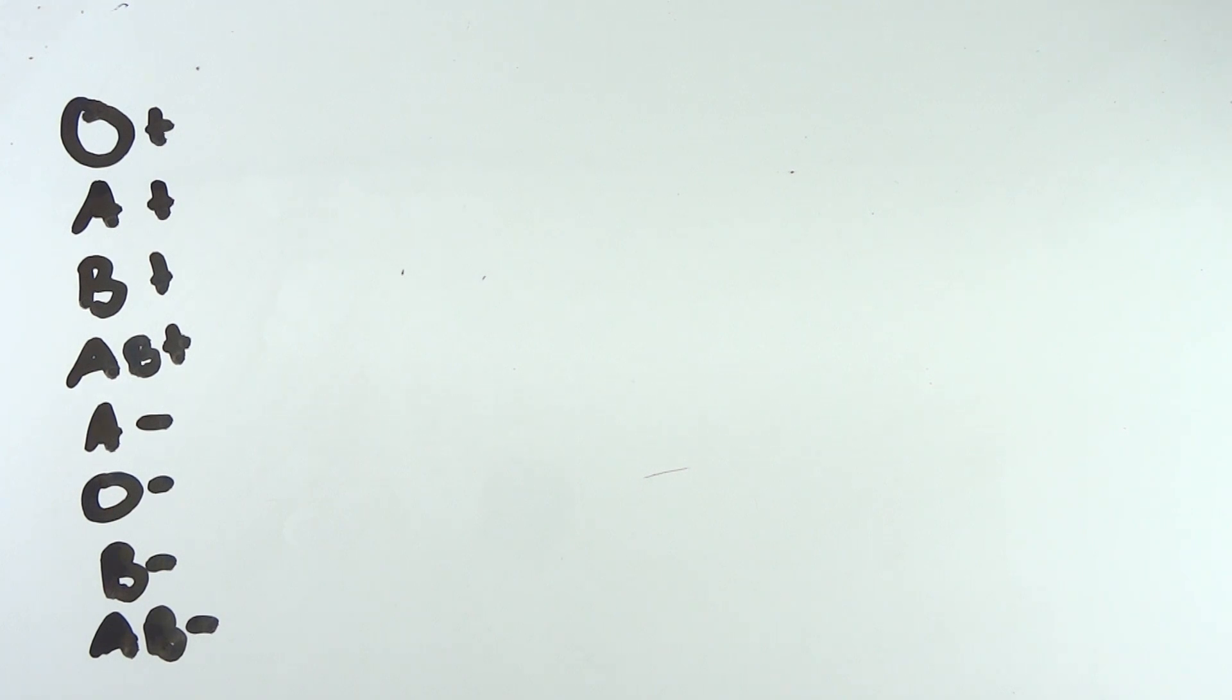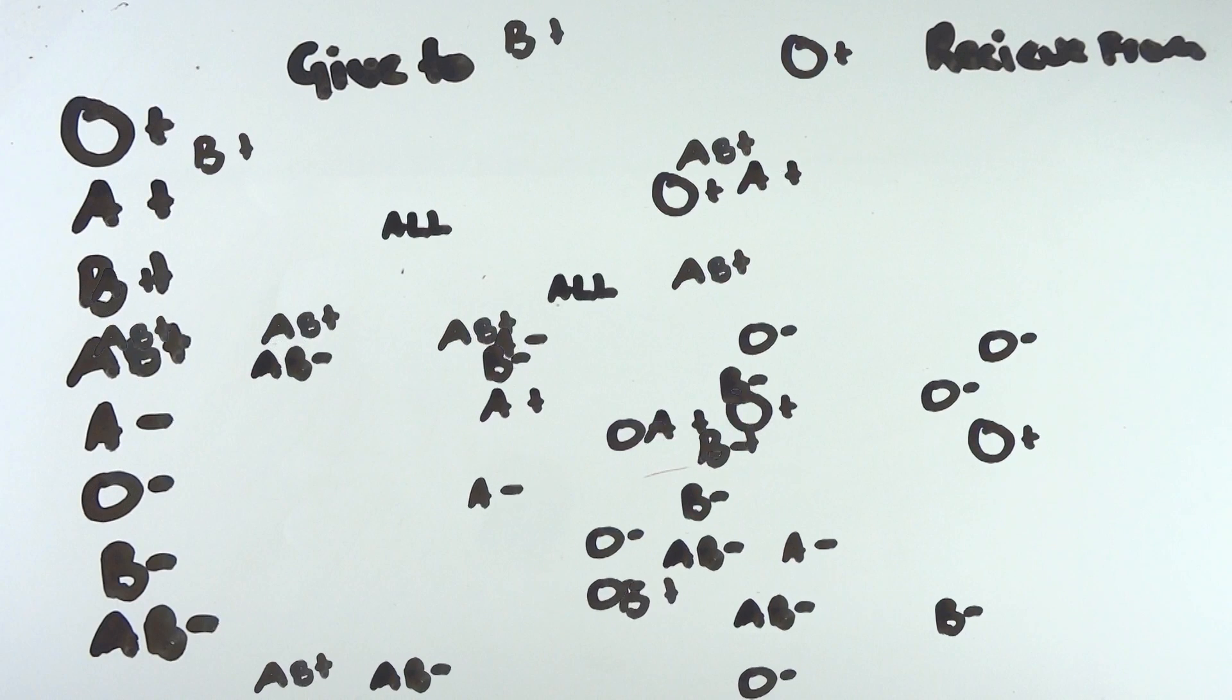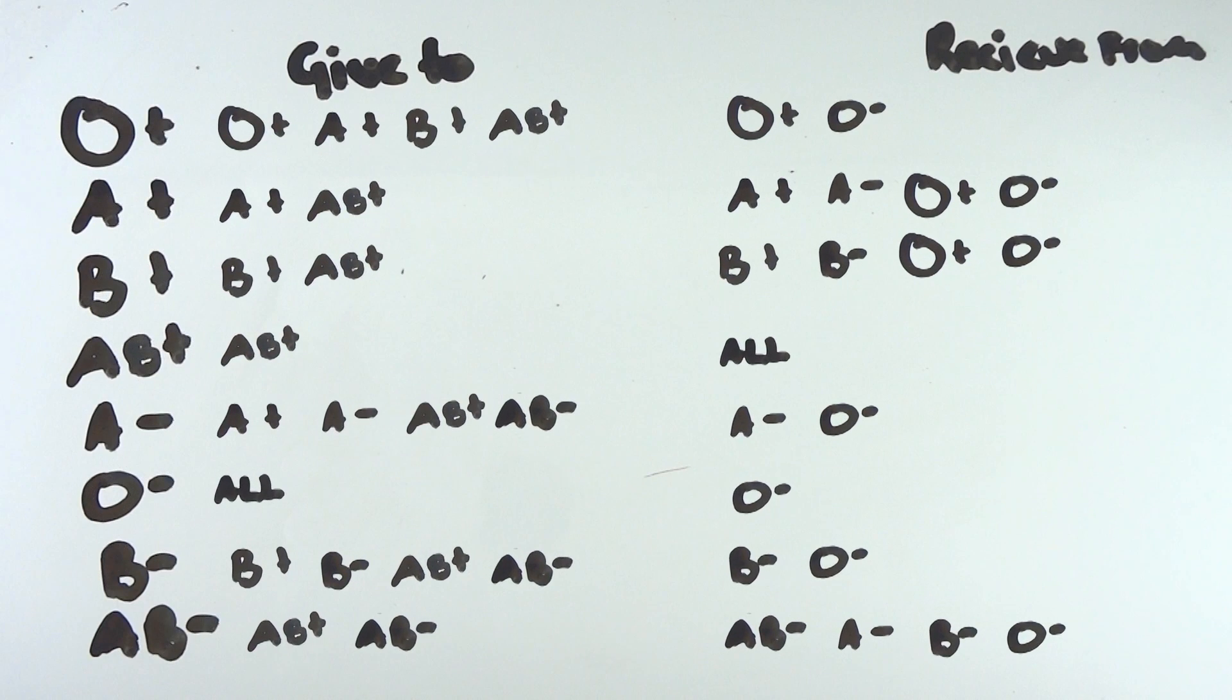Things begin to get complicated when we begin to consider which blood groups can donate to each other. However, those with O negative blood are called universal donors, because any blood group is able to receive their blood type. AB plus on the other hand are universal receivers, because they are able to receive any blood type from any group.